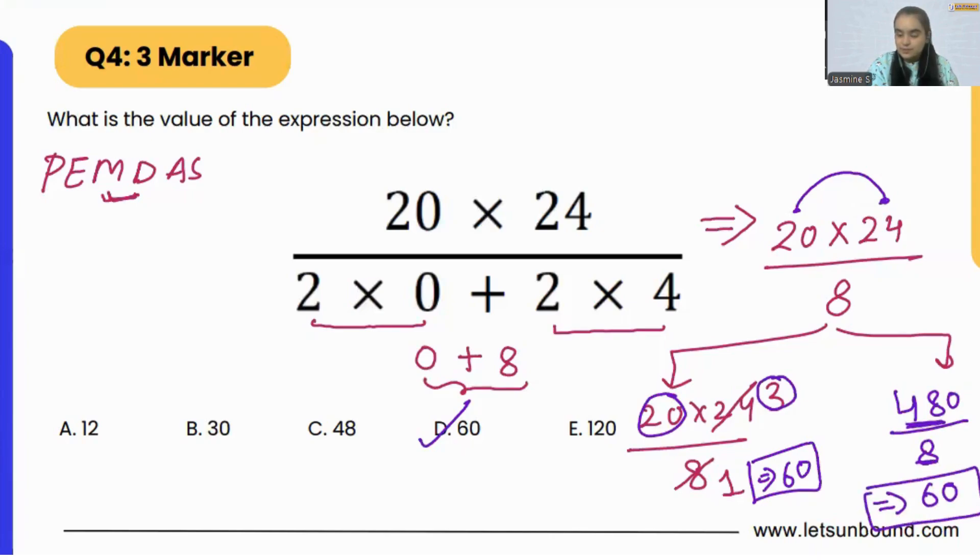8 times 6 is 48 and then a 0, so 60. Here as well, we got the answer as 60 only.